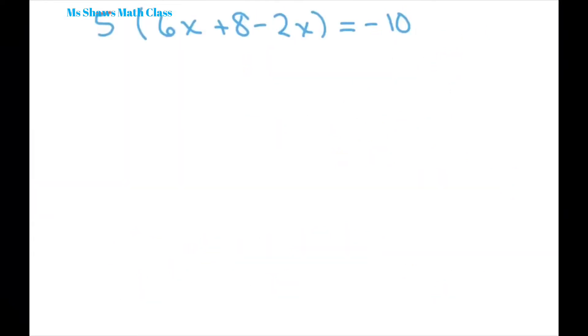The next one is very similar. So what we're going to do is collect like terms. We get six x's minus two x's is going to be four of those x's plus eight.